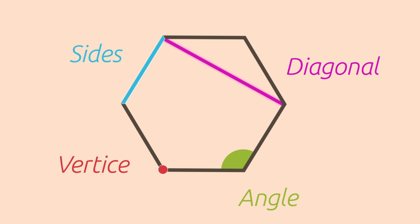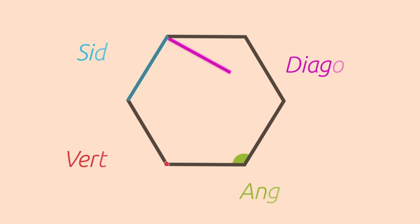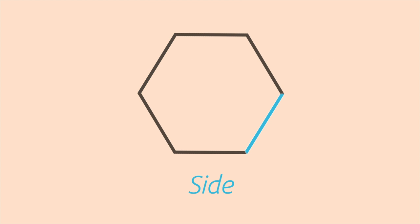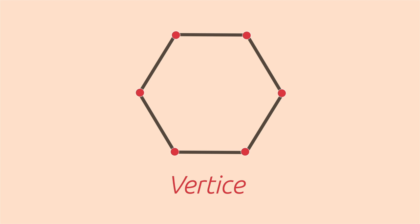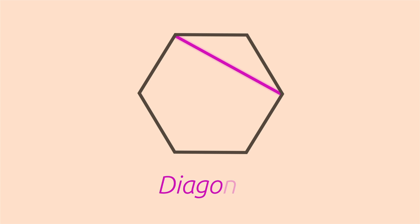Polygons are formed by several parts. The sides are each of the lines or segments that form the polygon. The vertices are the points where all sides meet. The angles are the space determined between two adjacent sides. The diagonals are the segments that connect two non-adjacent vertices.